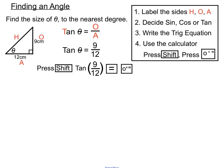Then press equals to lock it in, and then press the degrees, minutes, and seconds button to convert it into that format. When we press Shift Tan, 9 over 12, equals, and then the degrees, minutes, and seconds button, we get 36 degrees, 52 minutes, and 11.63 seconds.